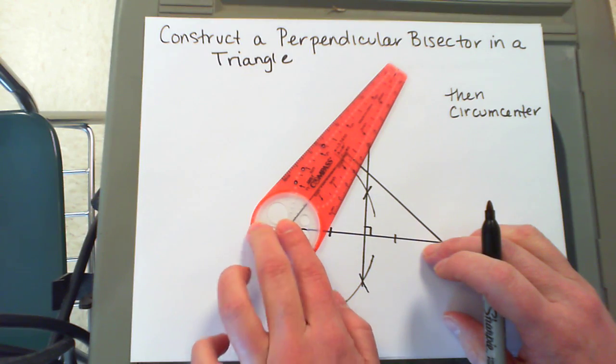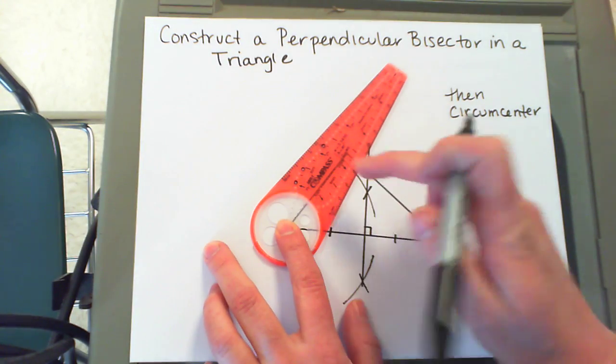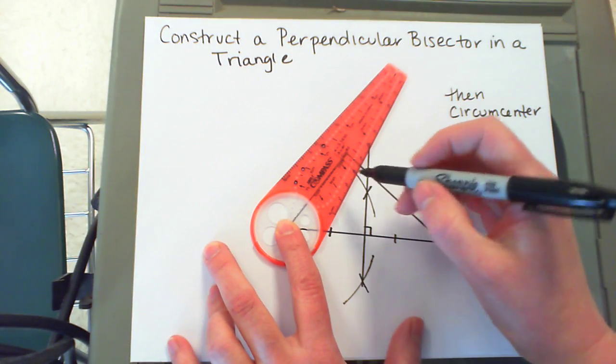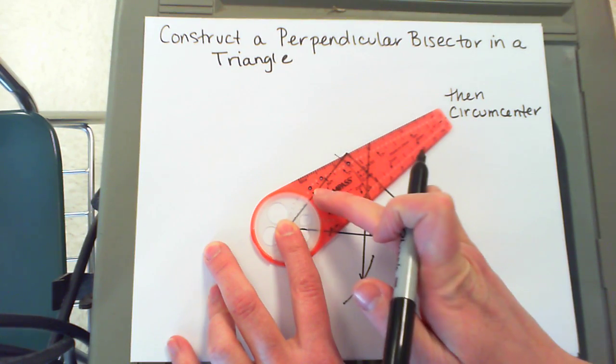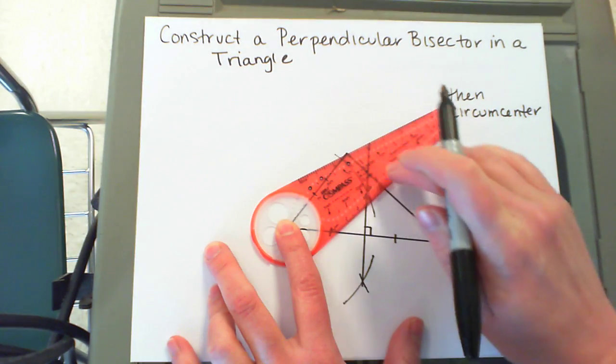I place the compass on the vertex of this side and pick an arc that's visibly more than halfway. This looks about halfway, so I'm going to pick this setting because it's more than halfway.